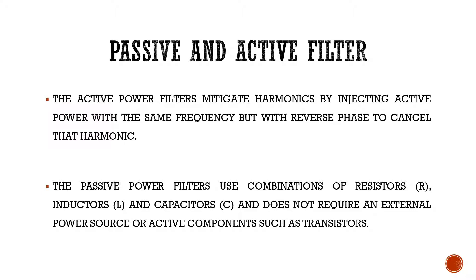The active power filter is one of the most commonly used filters for harmonic compensation in industries. It is capable of mitigating the harmonic present in the system by injecting an active power with a reverse phase, so that it cancels off the harmonic component already present in the system due to the non-linear loads connected. Whereas the passive filter uses a combination of resistor, inductor and capacitor, and does not involve any active components such as transistors. But it cannot give a dynamic compensation of harmonics.